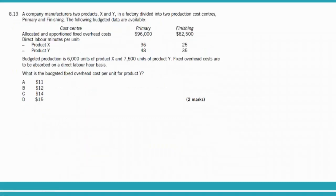Question 8.13 is a longer question requiring more attention. A company manufactures two products X and Y in a factory divided into two production cost centers: primary and finishing. Budgeted allocated fixed overhead costs are $96,000 for primary and $82,500 for finishing. Direct labor time per unit: product X takes 36 minutes and product Y takes 48 minutes in primary; product X takes 25 minutes and product Y takes 35 minutes in finishing.